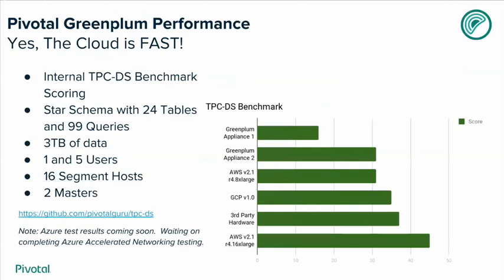You may be wondering: is it fast? Most definitely. At Pivotal, we use TPC-DS to benchmark and come up with a score for different deployments. TPC-DS is an industry standard used by many vendors. It contains a star schema with 24 tables and 99 queries. We test with three terabytes of data and one and five concurrent users, typically with 16 segment hosts and two masters. All the scripts for TPC-DS are on GitHub at GitHub Pivotal Guru TPC-DS.